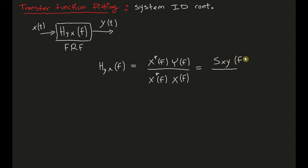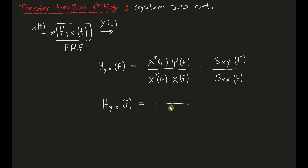Here we're writing down the cross spectral density and the auto spectral densities. We do the same thing for the H2 method. Ideally, if noises are small in the inputs and outputs of your system, you should expect these two methods to give you fairly similar, if not identical, results.